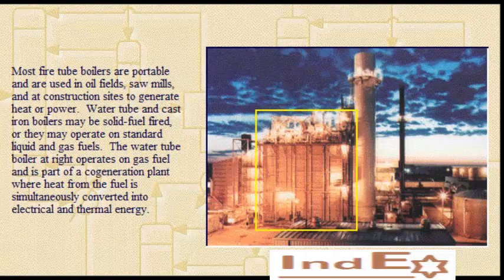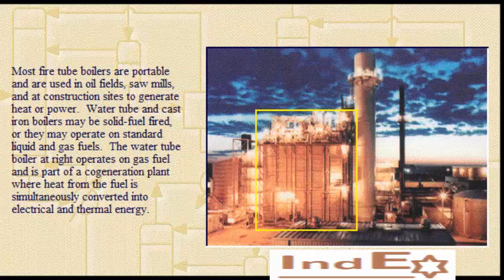Water tube and cast iron boilers may be solid fuel fired, or they may operate on standard liquid and gas fuels. The water tube boiler at right operates on gas fuel and is part of a cogeneration plant, where heat from the fuel is simultaneously converted into electrical and thermal energy.